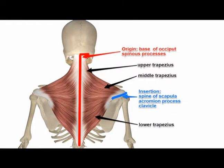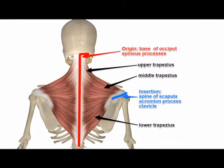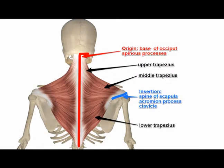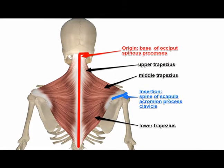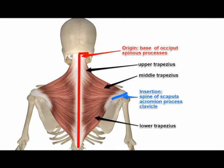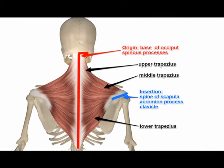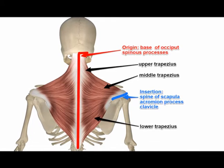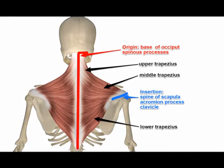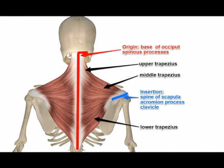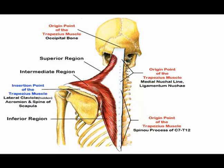The origin of the upper portion is the external occipital protuberance, the medial third of the superior nuchal line, the ligamentum nuchae, and the spinous process of cervical vertebrae C7.